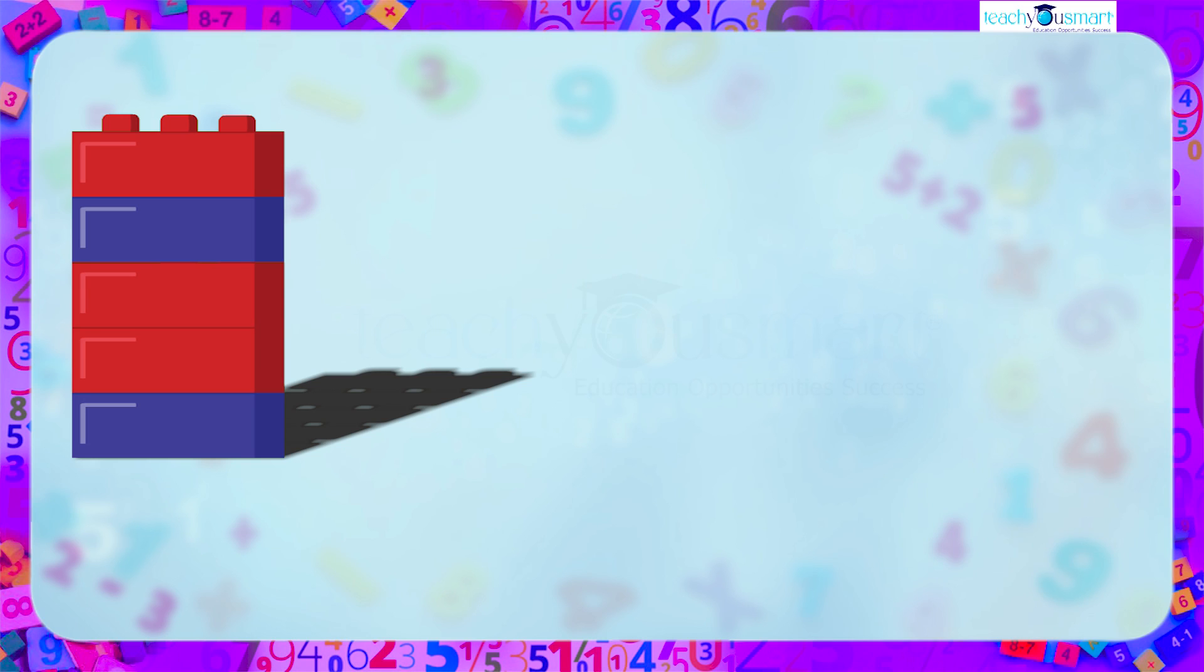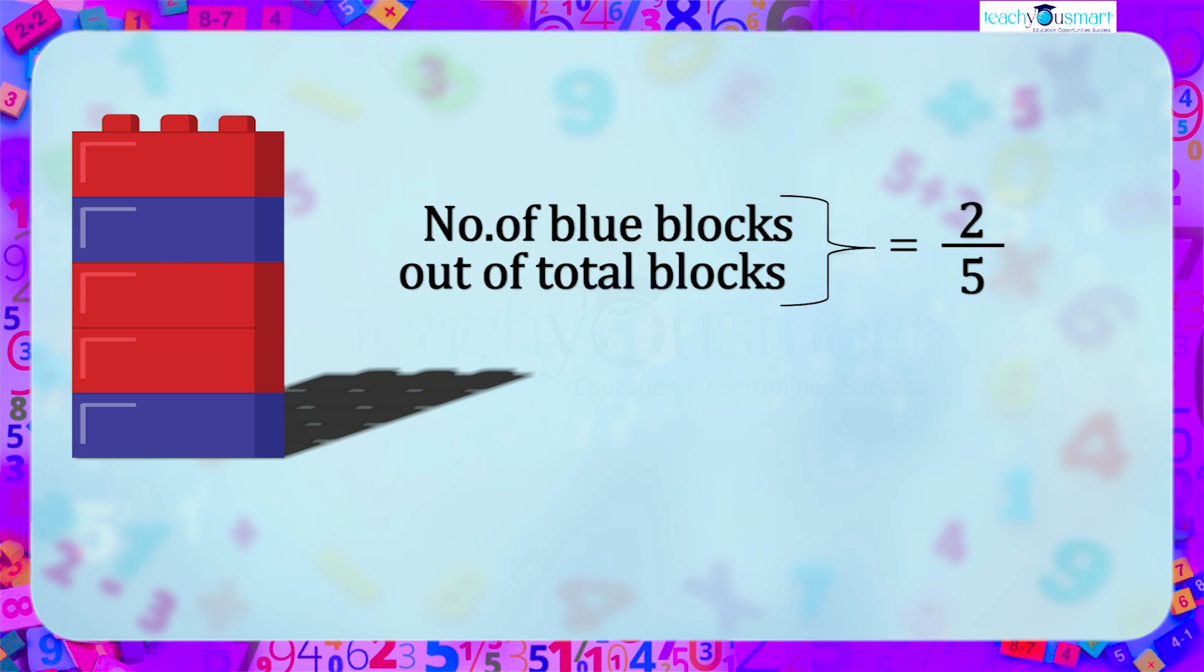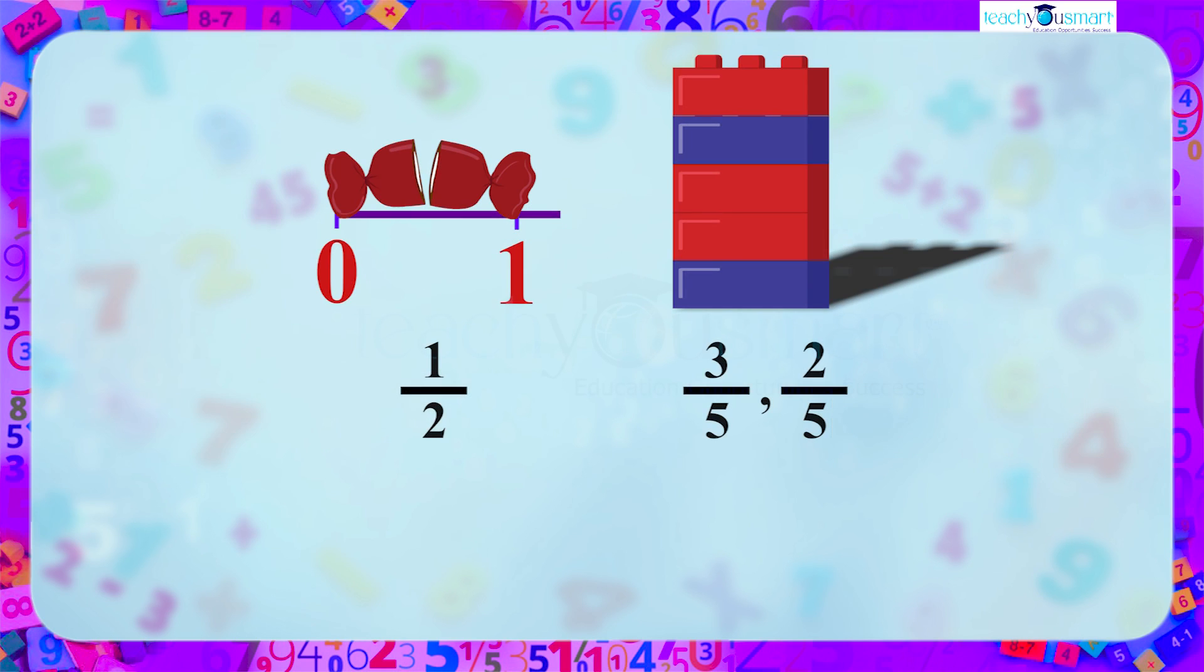Now consider the blue blocks. Two blocks are blue out of 5. Blue blocks can be represented as 2 by 5. Here 2 by 5 is also a fraction. Here 1 by 2, 3 by 5, and 2 by 5 are fractions, which is in the form of p by q.